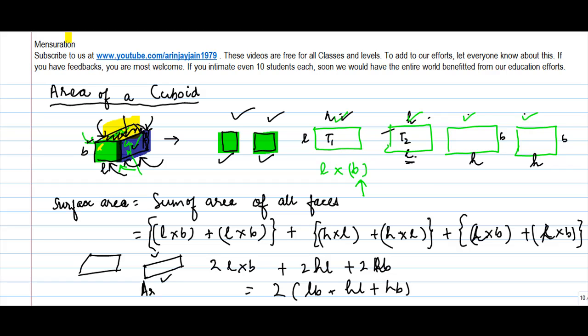So area of a cuboid is equal to 2 times the length into breadth, the breadth into length, and height into breadth.